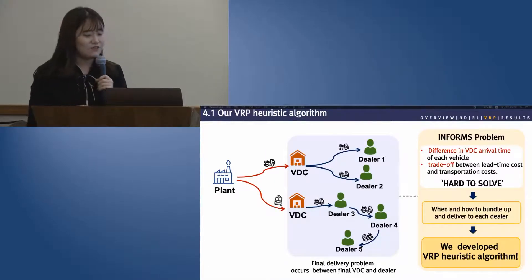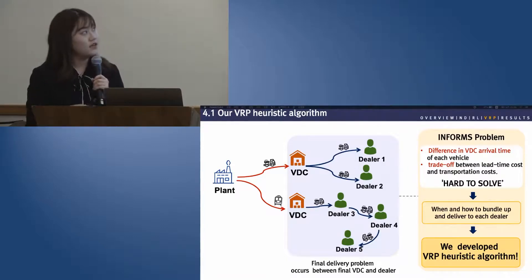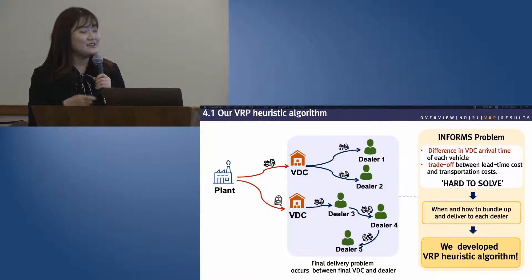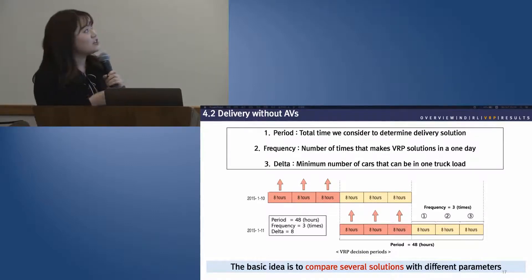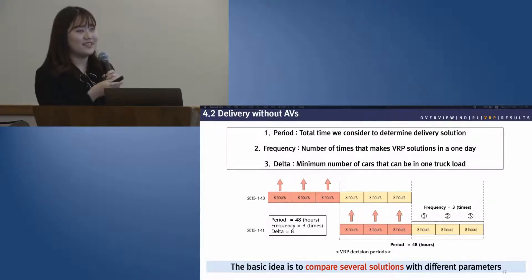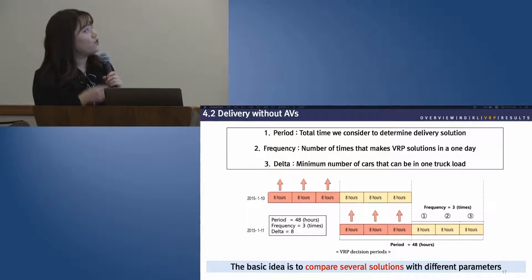Now we will explain the final delivery that occurs between the final VDC and dealer. We make decisions about when and how to bundle up and deliver to each dealer, considering vehicle arrival type and VDC. We developed a modified VRP heuristic algorithm with three parameters: period, frequency, and delta. Period means planning horizon, frequency means the number of times the VRP solution is generated in one day, and delta means the minimum number of cars that can be in one truck load. The basic idea is to compare several solutions with different parameters. This algorithm is applied to the non-AV scenario.